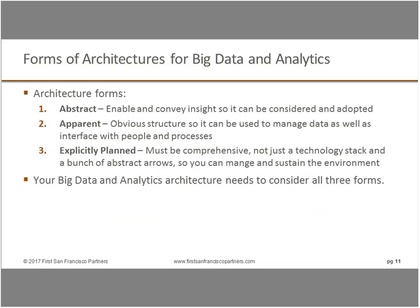The three forms are: abstract — conveys insight so people can say 'yes, I think we should go that way'; apparent — the most common, showing pieces and parts, how they hang together, and what they interface to; and explicit — not just arrows and stacks, but something you can actually manage and sustain, almost at blueprint status. Whatever you do with big data and analytics, it isn't just throwing up boxes with Hadoop and Spark in them — that's meaningless to part of your audience. You have to also address functionality, interconnection, and interface.